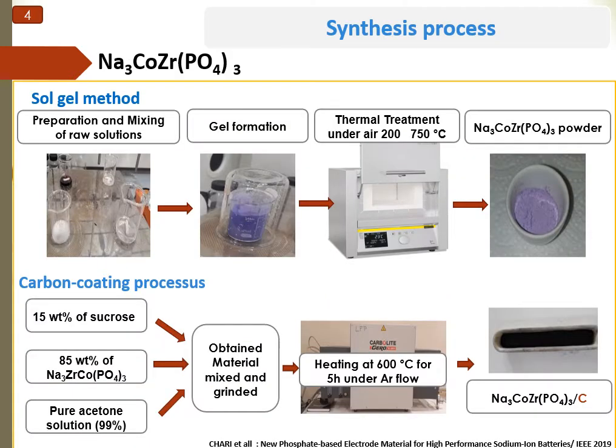Let's start by the synthesis process. The cathode materials were obtained through a sol-gel reaction process from aqueous solutions. The mixture was stirred for 30 minutes and heated up to 60°C until complete evaporation of the solution and gel formation. The resultant residue was heated at a temperature between 200°C and 700°C. Intermediate grindings were performed on the sample before each calcination step. Concerning the carbon coating process, in order to improve the electron conductivity of the cathode materials, 85% of the obtained materials was ultimately mixed and ground with saccharose using a pure acetone solution, followed by heating at 600°C for 5 hours under argon flow.